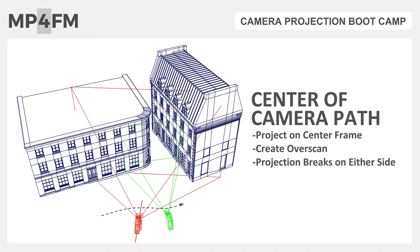The first projection placement type is center frame. Looking at this diagram, the green camera represents the shot camera, the dotted line represents the camera path, and the red camera represents the projection camera. The projection camera has been placed in the middle of the shot path, and the focal length, or overscan, has been increased. As the shot camera moves closer to the projection camera, the better the projection will look. As the shot camera moves farther away toward the head or tail of the shot, the projection starts to break.